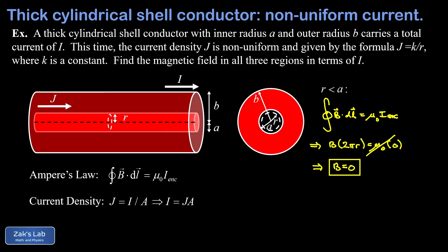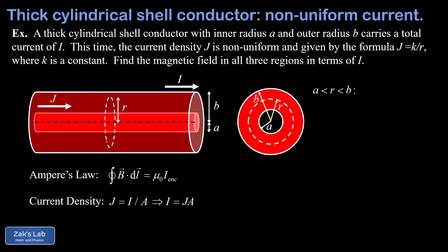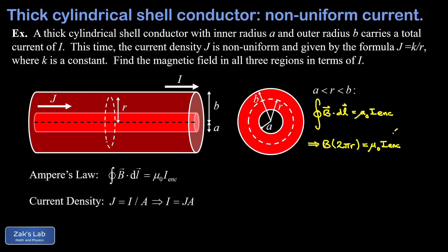Now that we've knocked out the two trivial cases, we can get to the real point of this video: finding the magnetic field within the conductive material itself, where A < r < B. The enclosed current will depend on the size of the Amperian loop. We start by writing down Ampere's law — the path integral on the left reduces to B times 2πr as usual. The complication is that the enclosed current requires its own calculation since we're only enclosing part of the total current I. We can't simply multiply J times the enclosed area because J changes with radius.